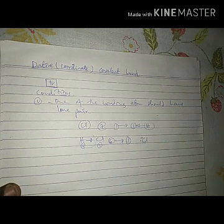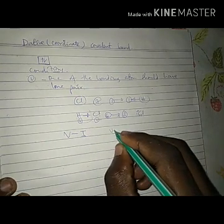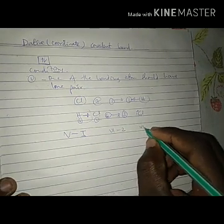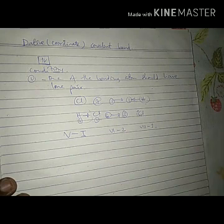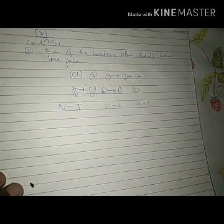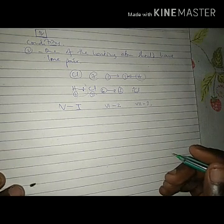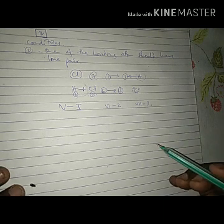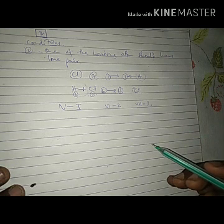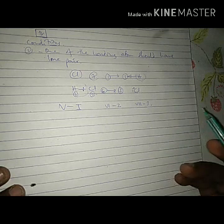Group five elements have one lone pair, group six elements have two lone pairs, and group seven elements have three lone pairs, while group four elements have no lone pairs. So one among the bonding atoms should have a lone pair, meaning that atom should be a non-metal which has a lone pair. The lone pair is a pair of electrons which cannot take part in normal covalent bond formation.